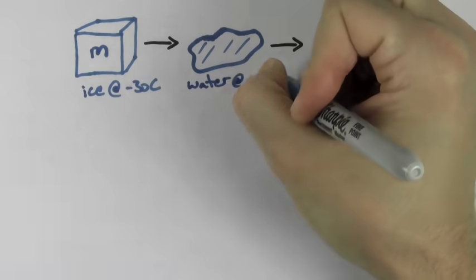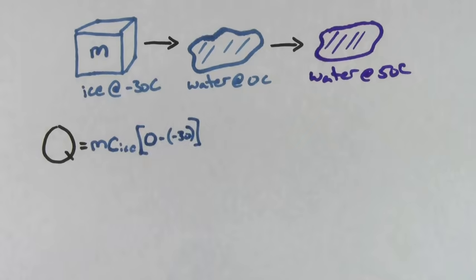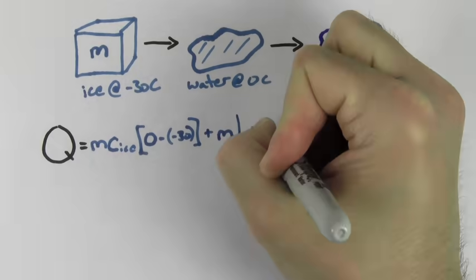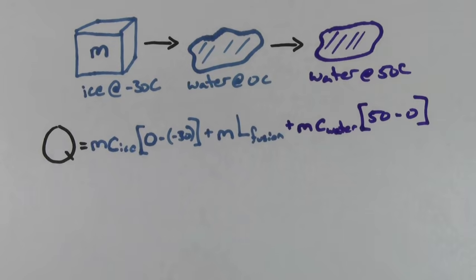If ice at negative 30 degrees Celsius turns into water at 0 degrees Celsius, which turns into water at 50 degrees Celsius, you can figure out how much heat it would take to accomplish this whole process. First, you have to raise ice to the melting point, which is 0 degrees Celsius. Then you have to melt all of the ice into water. Then you have to raise the temperature of the water to 50 degrees Celsius. This would be the total amount of heat gained by the ice.